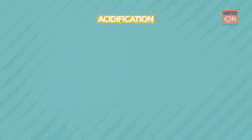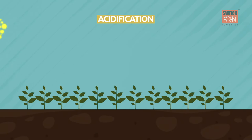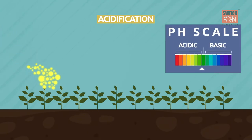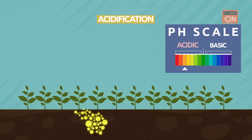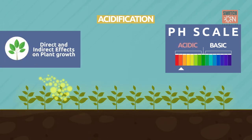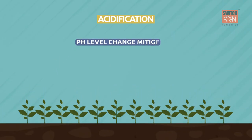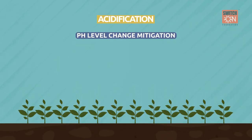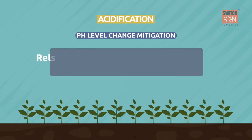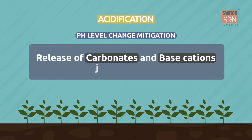Acidification is the process by which addition of nutrients in soil causes decreased pH level, which can have a variety of direct and indirect effects on plant growth. Generally, during acidification, changes in soil pH are mitigated by the release of carbonates and base cations from the soil.